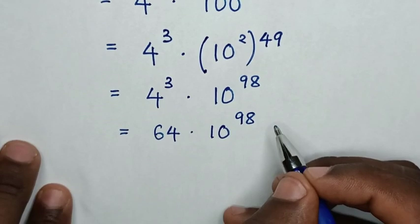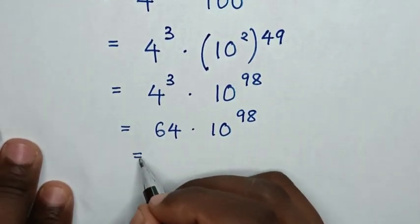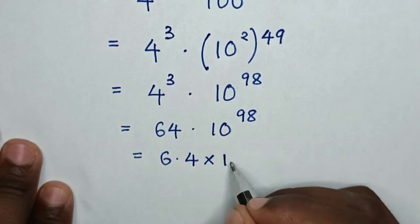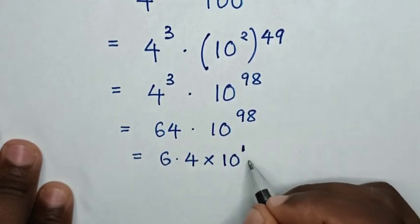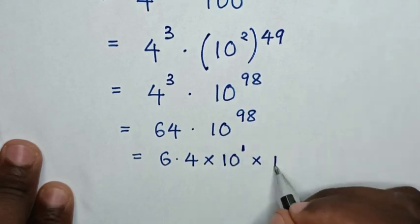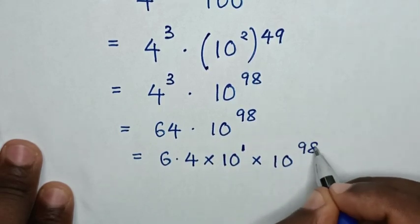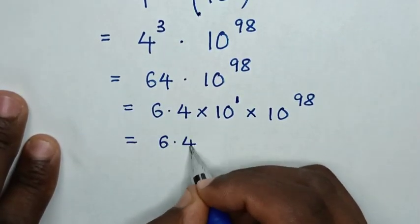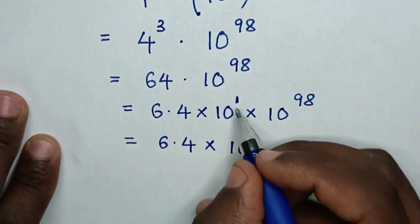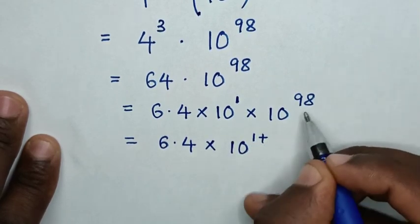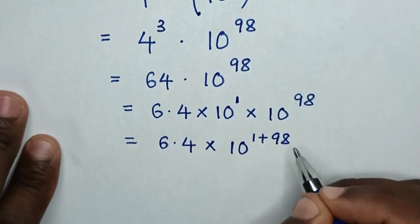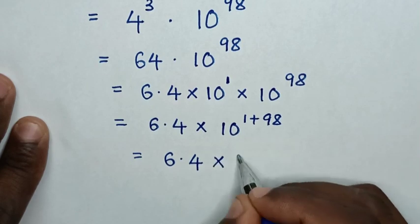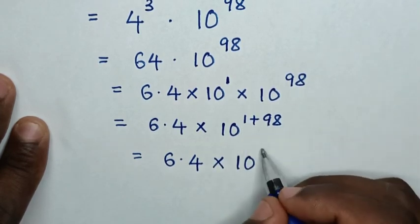In the next step, for 64 to have one decimal place, it will be equal to 6.4, then times 10 — so this 10 can be written as 10 power of 1, then times 10 power of 98. In the next step, it will be equal to 6.4 times 10 power of 1 plus 98, which gives us 6.4 times 10 power of 99.